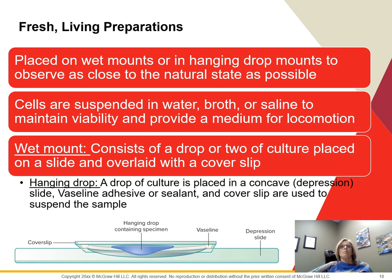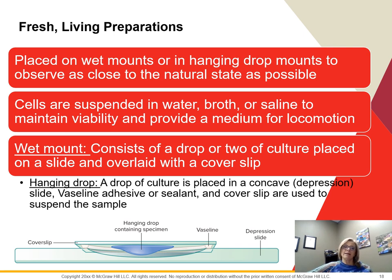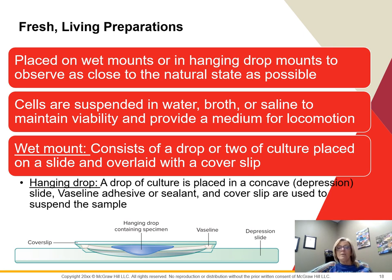Living preparations are placed on a wet mount or a hanging drop mount — we usually do wet mounts in class. This keeps the specimen as close to natural as possible, placing it in water to keep it viable and sometimes to allow locomotion. For a wet mount, you place a drop or two of culture on a slide and put a coverslip over it. A hanging drop slide has a little deep well in it for the specimen.